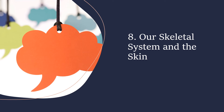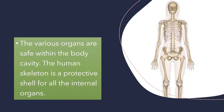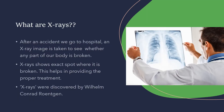Namaskar. Today we start our new chapter on the skeletal system. Our skeletal system and its scheme — various organs are safe within the body cavity. The human skeleton is a protective shell for all the internal organs. Our body has many small body parts that are kept safe. Bones form the skeleton, and the skeleton is like a framework for our body.